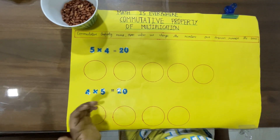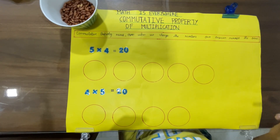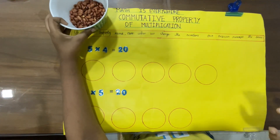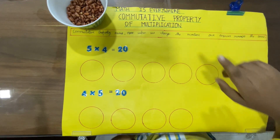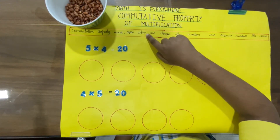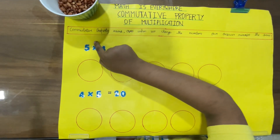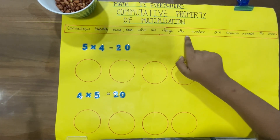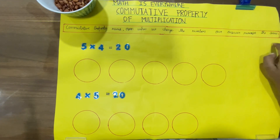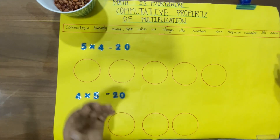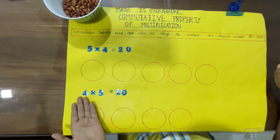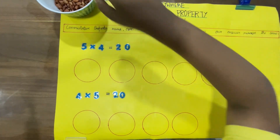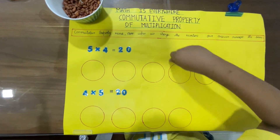Math is everywhere! Today I found math in my mama's kitchen. Using beans, I can make the commutative property of multiplication. Commutative property means even when we change the order of numbers, our answer remains the same. For example, 5 times 4 is 20, and 4 times 5 is also 20. Now let's start — let's keep 4 beans in each of these 5 circles.